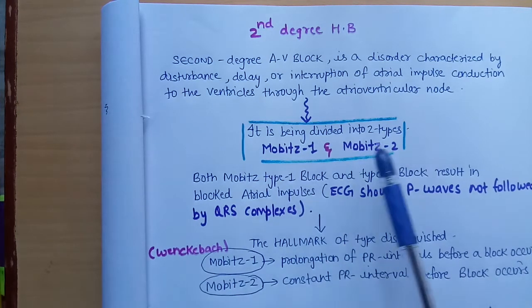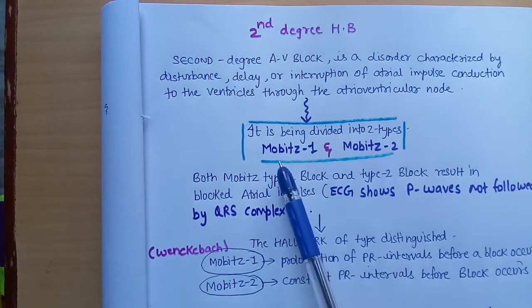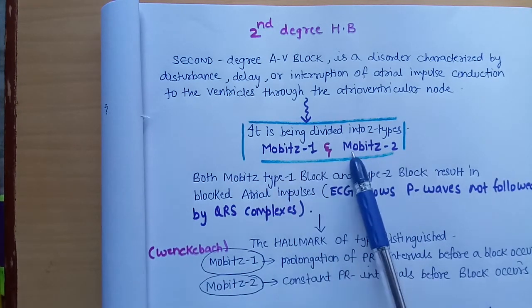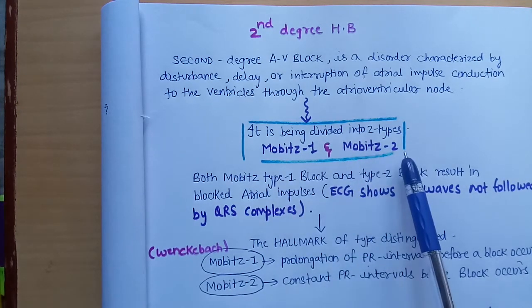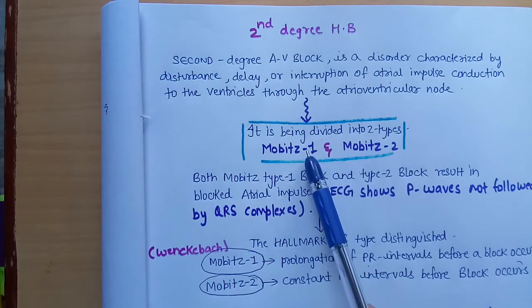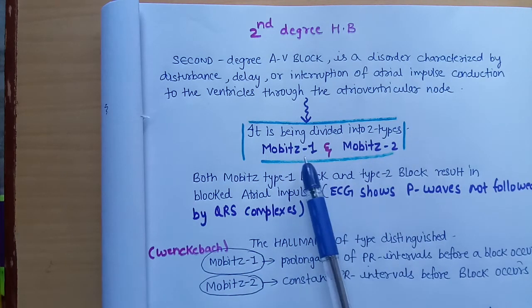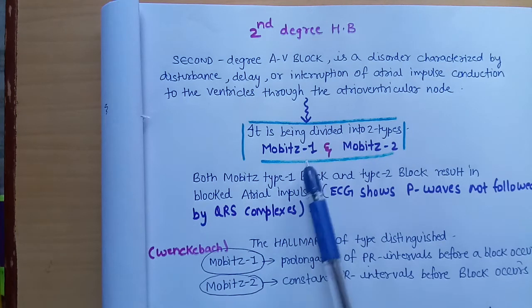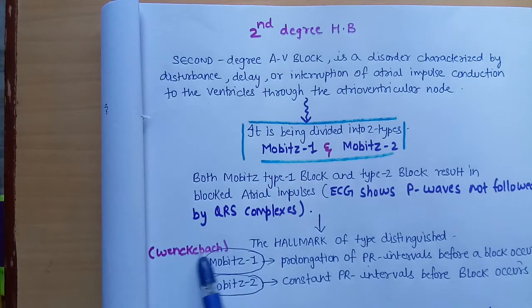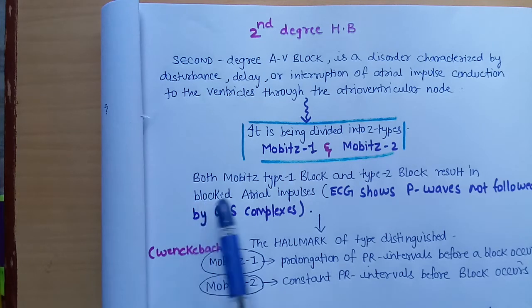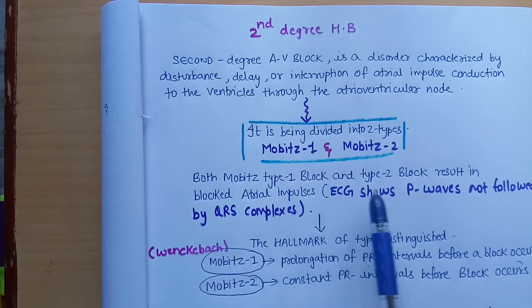It is divided into two types: Mobitz type 1 and Mobitz type 2. Mobitz type 1 is also called Wenckebach block — another name is Wenckebach.